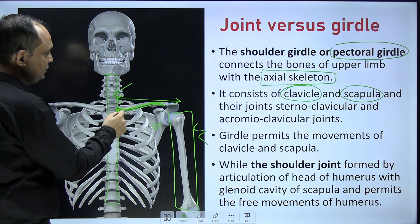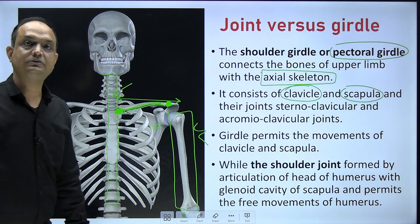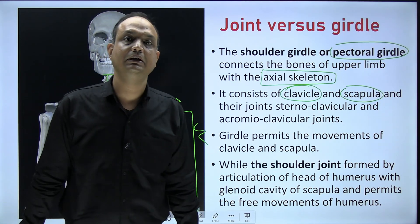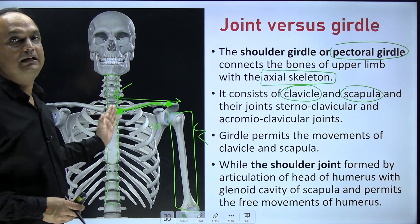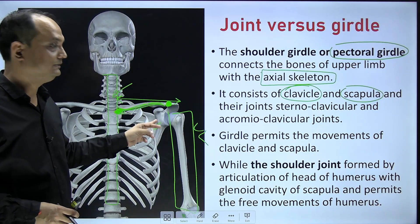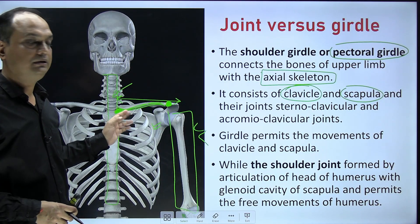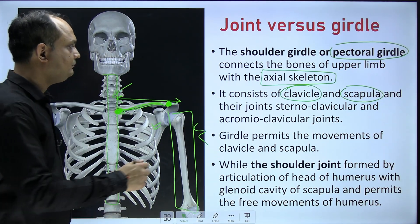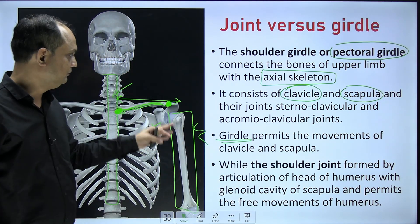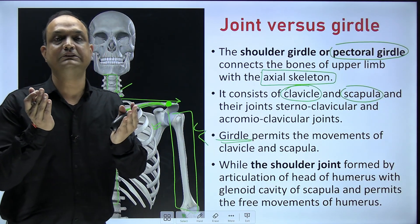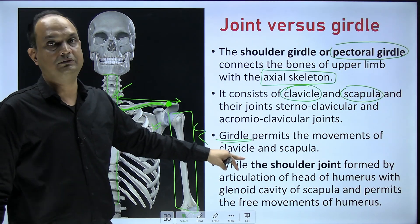Here you can see the clavicle and the scapula. The joints of these bones are the sternoclavicular joint and the acromioclavicular joint. So the pectoral girdle connects the upper limb with the axial skeleton with the help of two bones — clavicle and scapula — and two joints. This girdle permits movement of the clavicle and scapula, such as protraction, retraction, and rotation of the clavicle during overhead abduction.